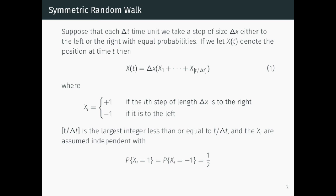More precisely, suppose that each delta t time unit, we take a step of size delta x, either to the left or the right with equal probabilities. If we let X(t) denote the position at time t, then we will have equation 1.